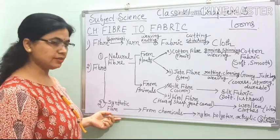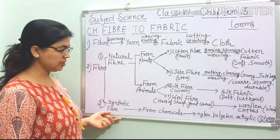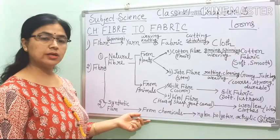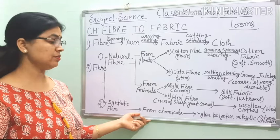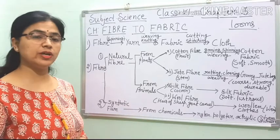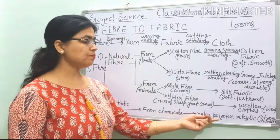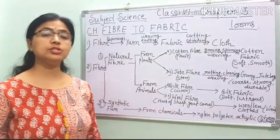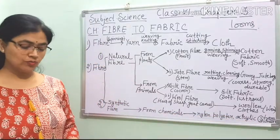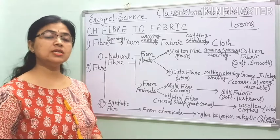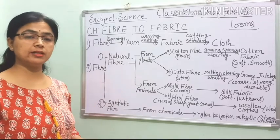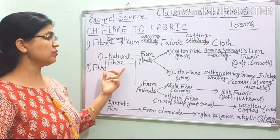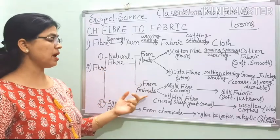The second type is synthetic fibre. We get synthetic fibre from chemicals. The names of synthetic fibres we wear are nylon, polyester, and acrylic. These are strong and durable. The reason is because these are man-made. We are making these ourselves — we are not getting synthetic fibres from natural sources like plants and animals.